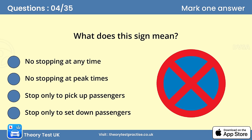Question 4. What does this sign mean? The answer is A: No stopping at any time. This traffic sign means no stopping on the main carriageway at any time, not even to set down passengers. However, you may stop in a lay-by.